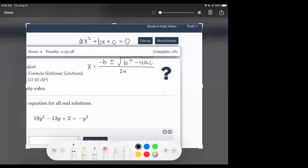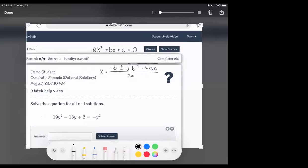Let's use this formula to help us solve this equation for all real solutions. So the first thing is we need to make sure that our quadratic equals zero. So that means we're going to take this guy and move it over there.